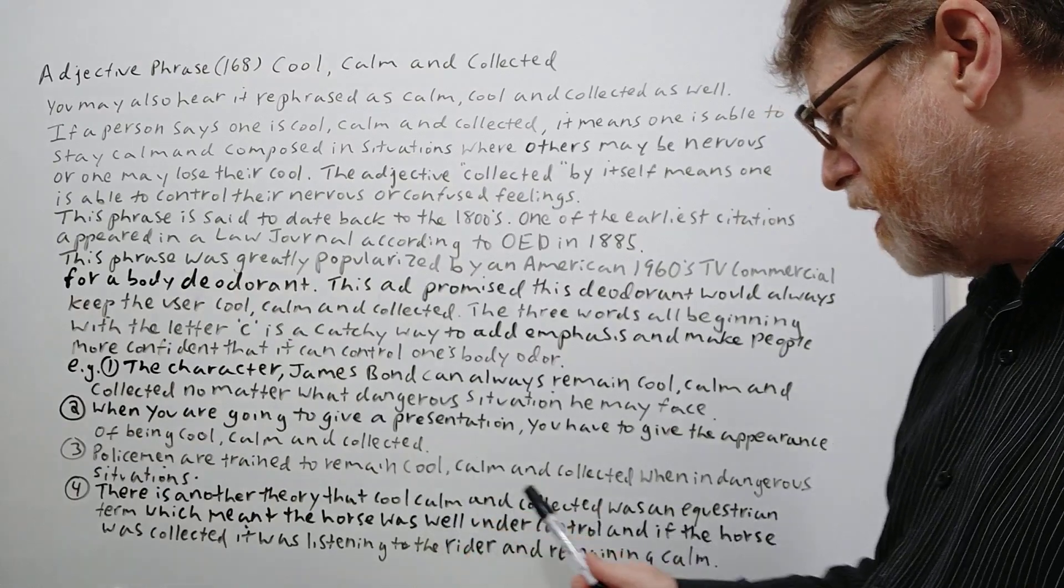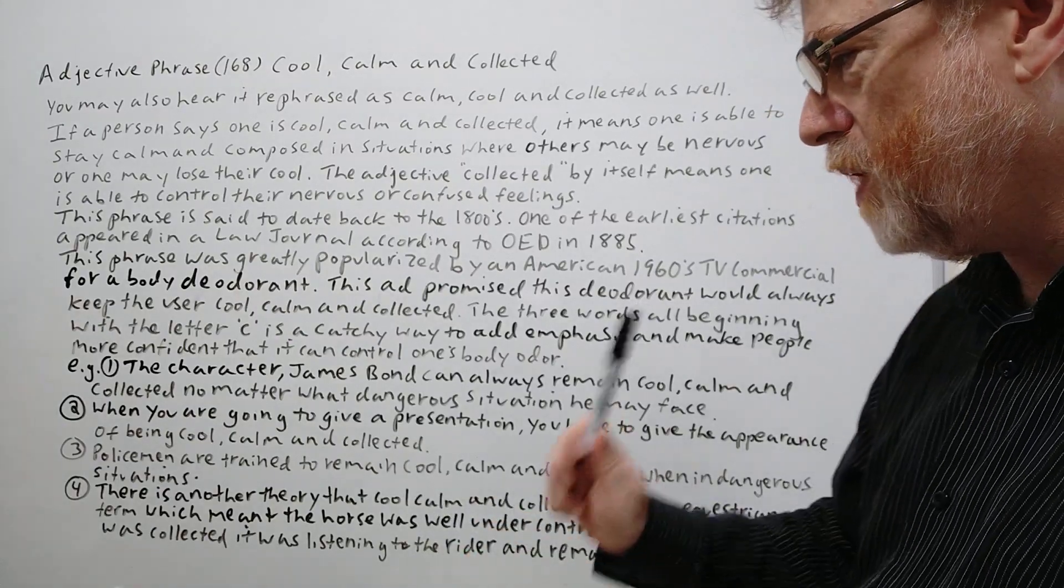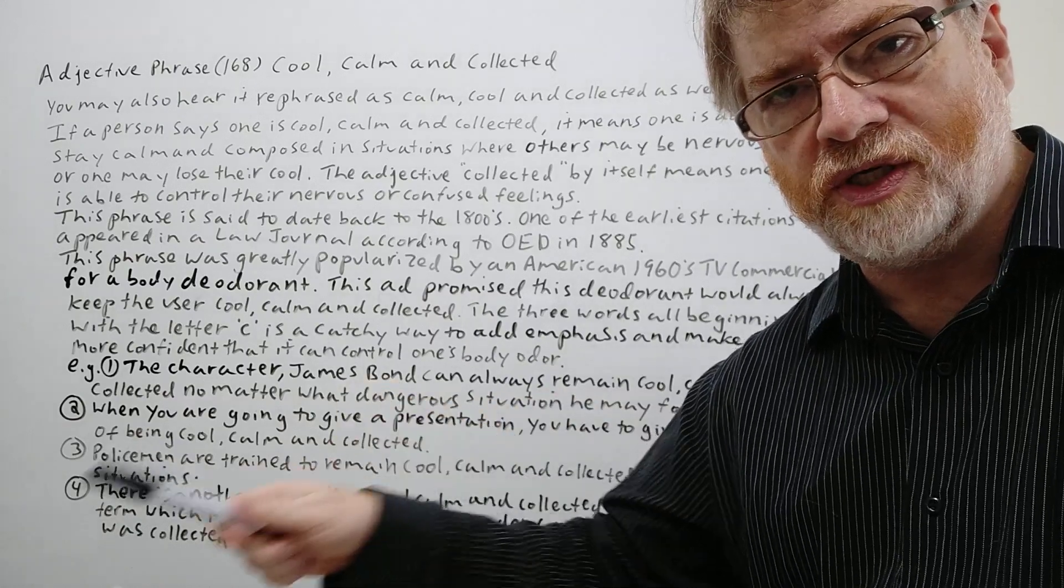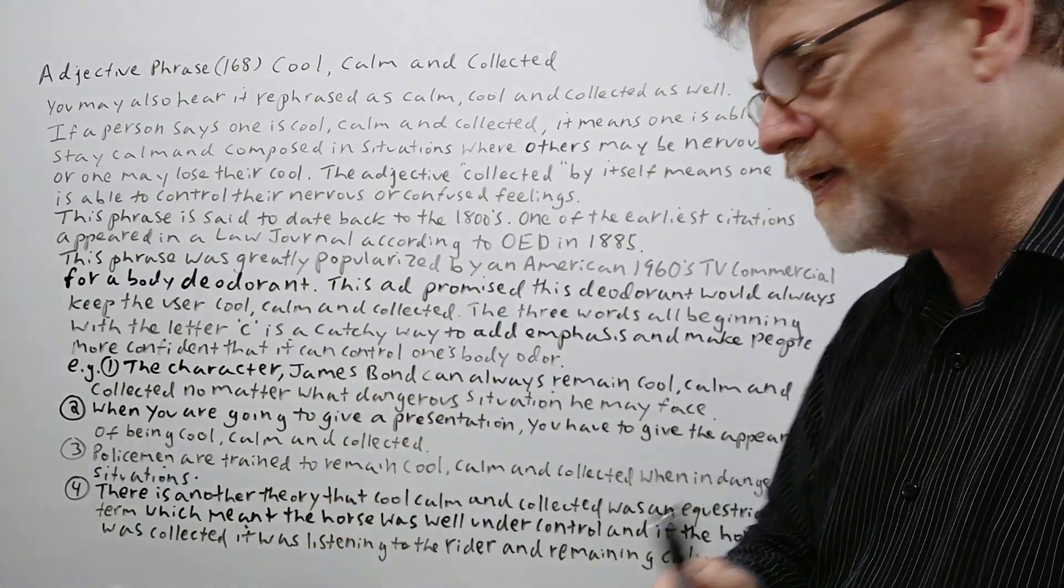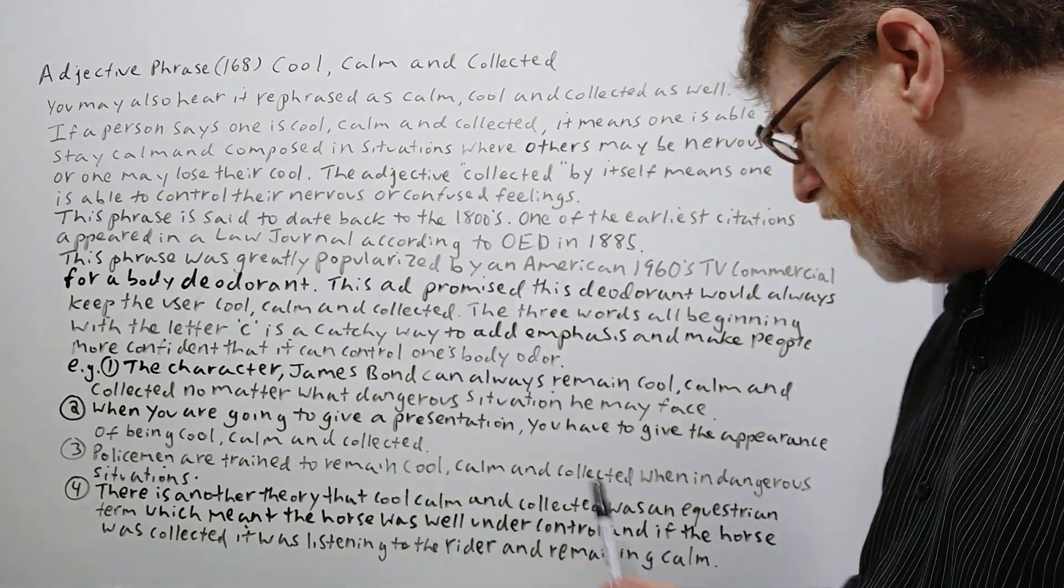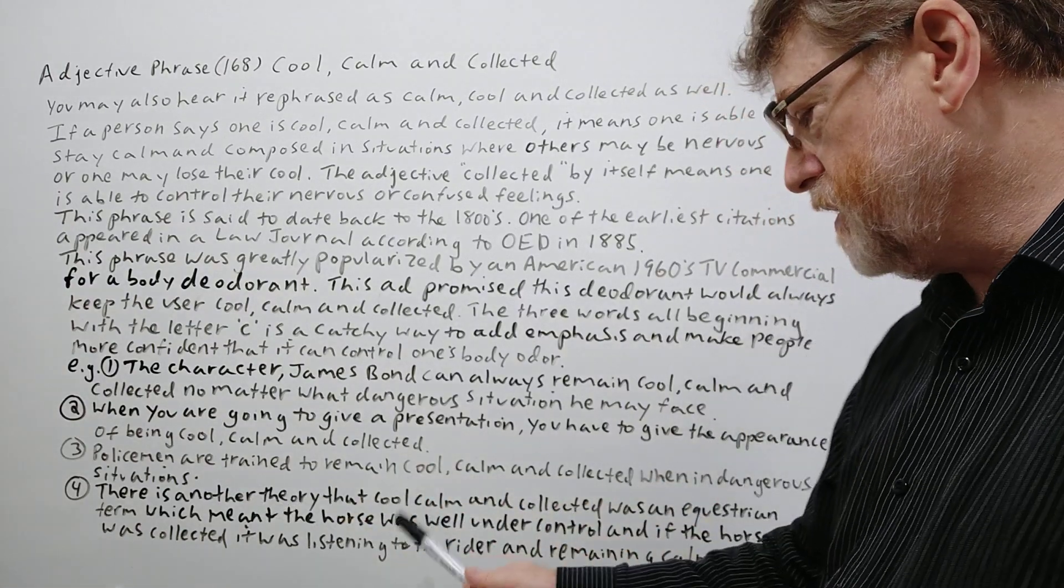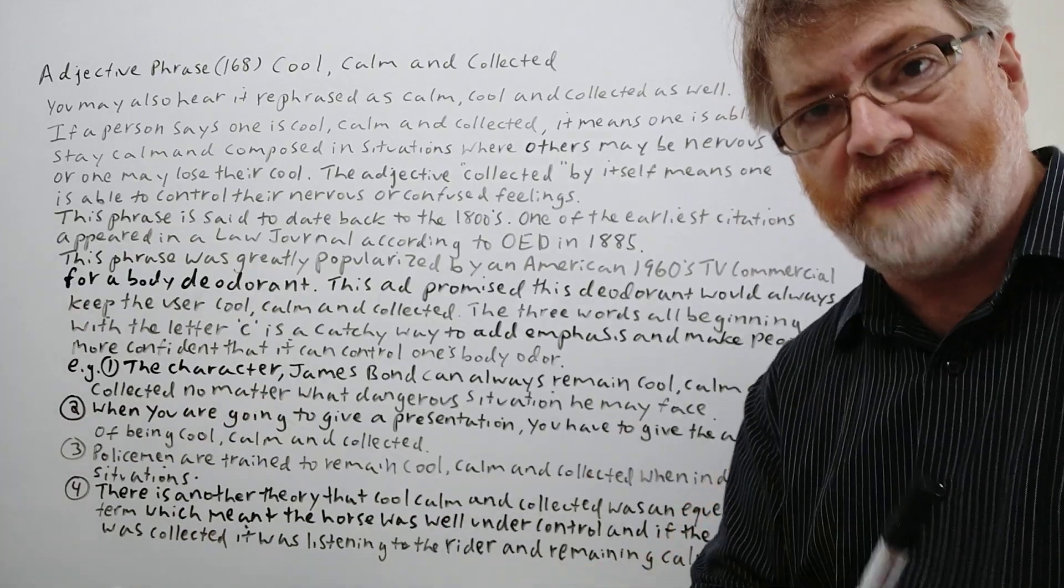There is another theory that cool, calm and collected was an equestrian term, relating to horses, horse racing things like that, which meant the horse was well under control and if the horse was collected it was listening to the rider and remaining calm.